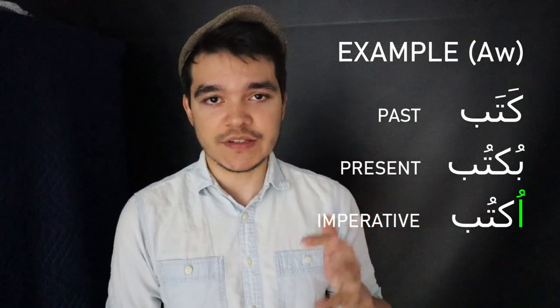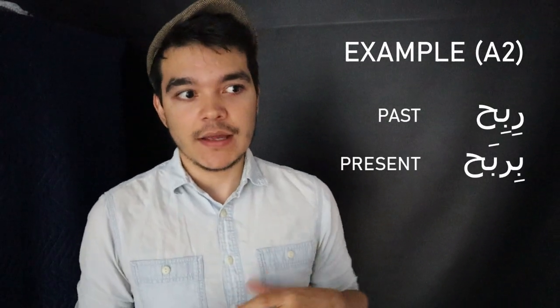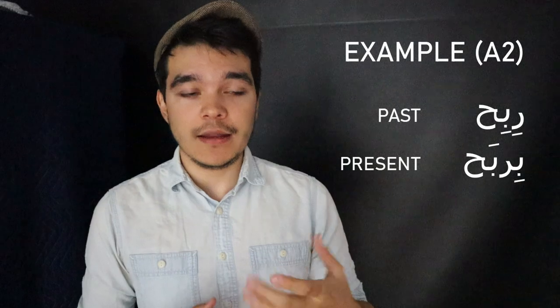For an A2 verb like ribeh, in the present tense it's huwe birbah. So in the imperative, it's just that without the bab: irbah. Then B1 and B2 verbs — ones missing the last letter — follow the same pattern, but you have to pay attention to how that last letter, the ya or alif maqsura, behaves, because it will change things slightly.